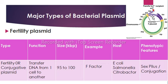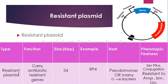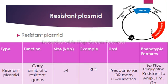Next we have resistant plasmid, which confers resistance to bacteria against certain antibiotics. They carry antibiotic resistance genes against antibiotics like ampicillin, kanamycin, gentamicin, etc. Resistant plasmids are also conjugative in nature. If resistant plasmids are transferred to pathogenic microorganisms, then those organisms will become more pathogenic or multidrug-resistant pathogens. For example, Salmonella, Shigella, and Pseudomonas. Their size is about 54 kilobase pairs.